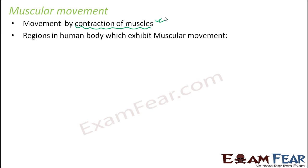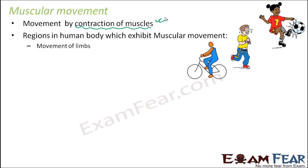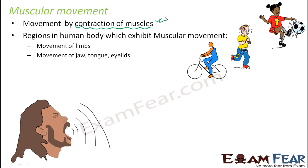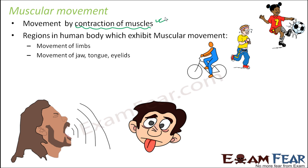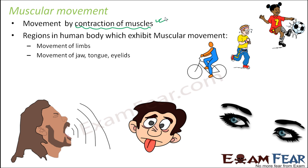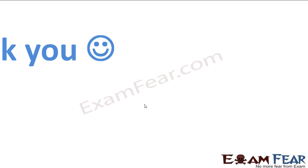Muscular movement is seen in the movement of limbs — whether hands or legs — when playing, cycling, running, walking, writing, or eating. Each and every activity involves a lot of muscular movement. The movement of your jaw, tongue, and eyelids — all small and big movements that are evident — are caused by the muscles. Whether you open your mouth, take your tongue out, or blink your eyelids, all of them are controlled by the muscles present inside our body.